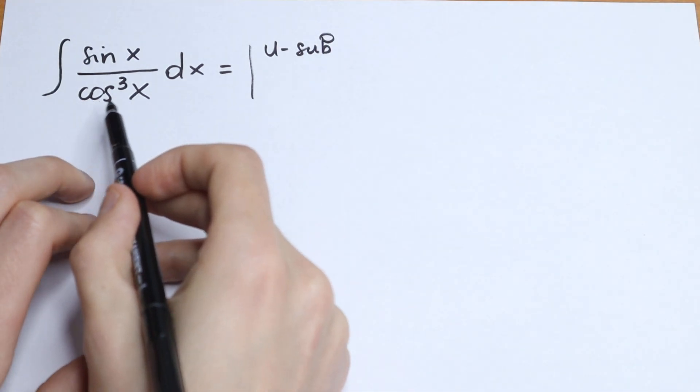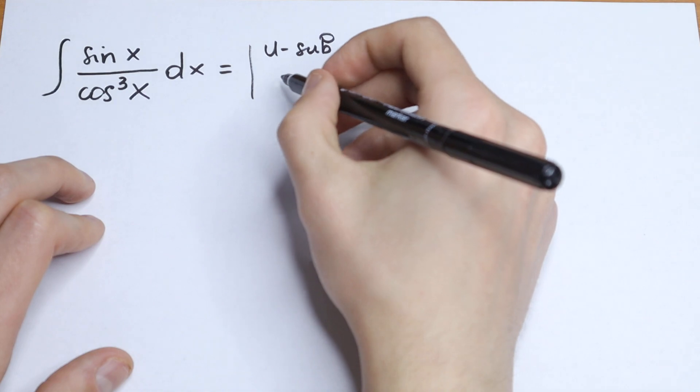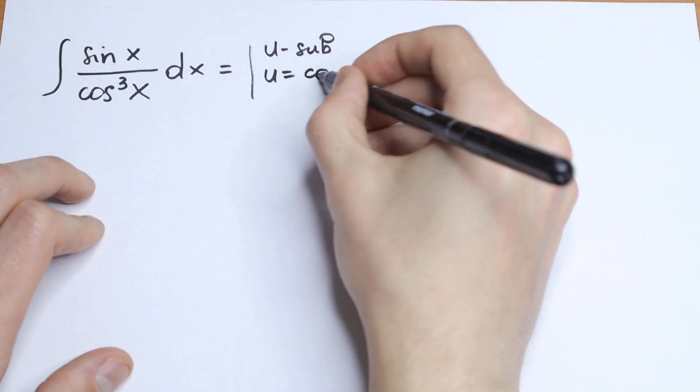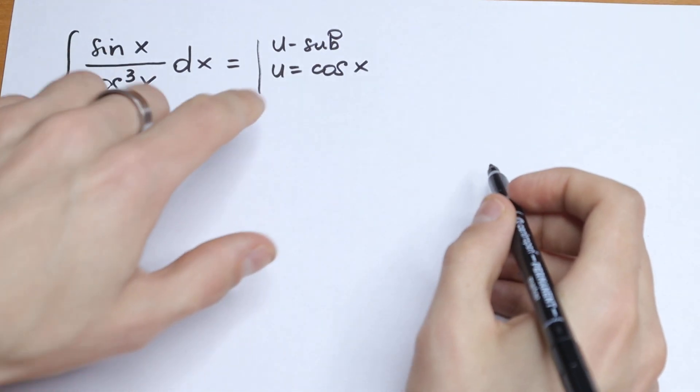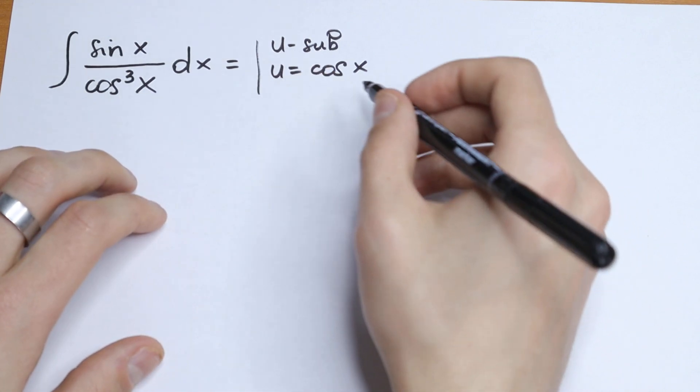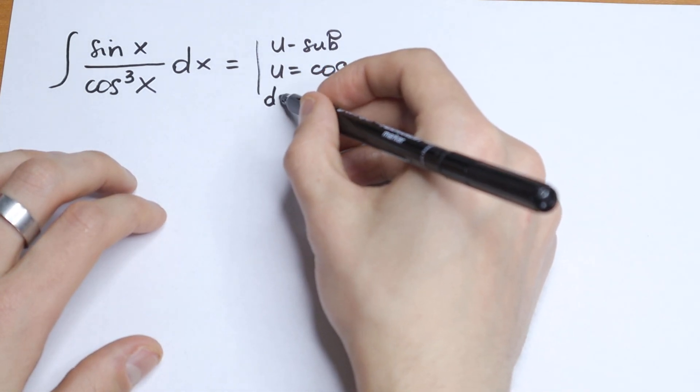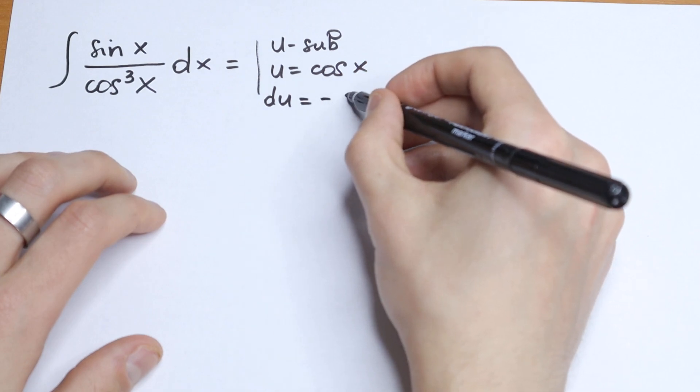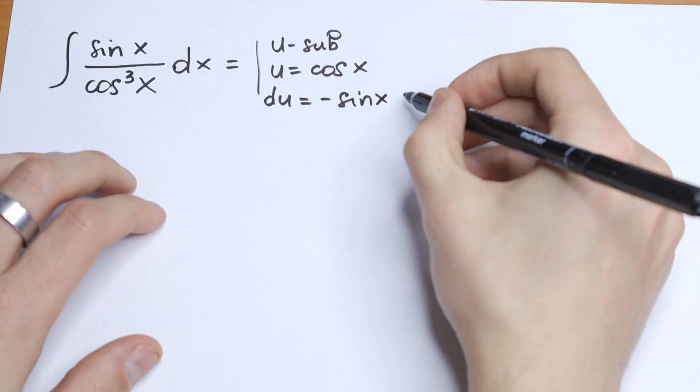So let this cosine x be our u. So u equals cosine x. And let's find our du from here. So let's find the derivative of this cosine x. So du will be equal to, of course, minus sine x dx.